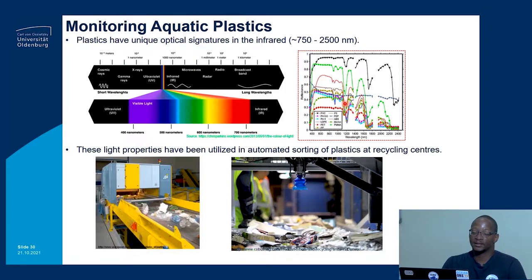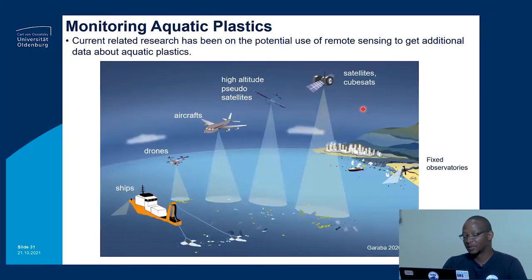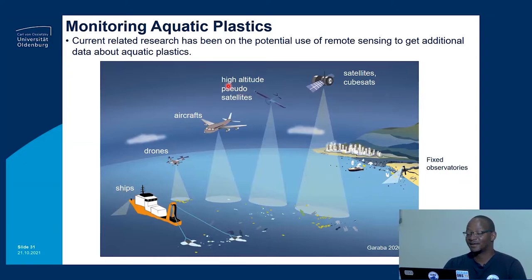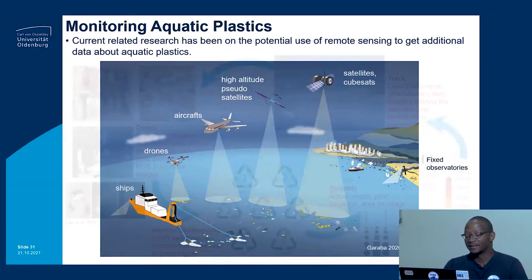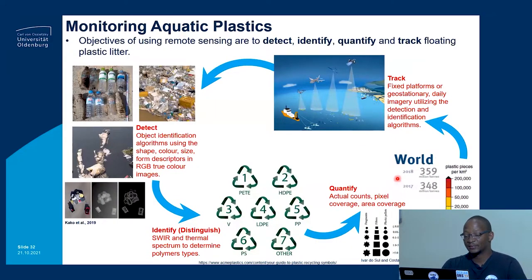My current research is related to using remote sensing to acquire additional data. Most of my work is based on using remote sensing data gathered from ships, drones, aeroplanes, high altitude pseudosatellites in space, or fixed observatories on land looking at waterways or beach areas. The objectives of using remote sensing for plastic data raised by the community are: they want to know if there are plastics, they want to identify the plastics — knowing what kind of plastic is there — and of course, in most cases, people want to know how much is there.